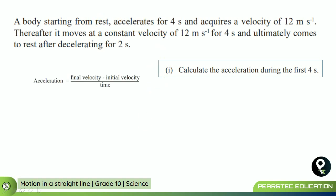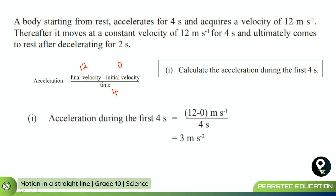Calculating the acceleration during the first four seconds: acceleration equals final velocity minus initial velocity, divided by time. We learned this in our previous session. The final velocity in the first four seconds is 12, the initial velocity is 0, and the time is 4 seconds. So: 12 minus 0 divided by 4 seconds equals 3 meters per second squared.